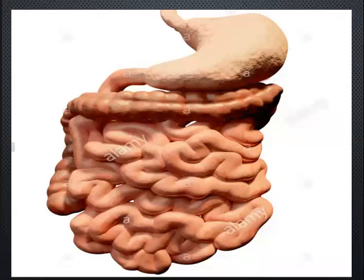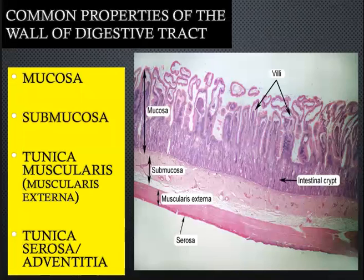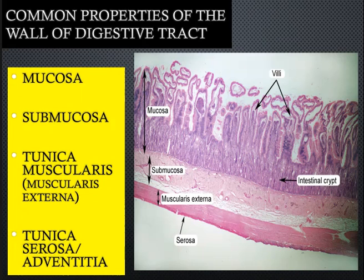This picture shows the esophagus, the stomach, and after the stomach — the beginning of the small intestine. Specifically, this is the duodenum. Just like the esophagus and stomach, the digestive tract of the small and large intestine share common properties: they have the mucosa, submucosa, tunica muscularis or muscularis externa, and the tunica serosa and/or adventitia.